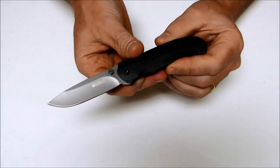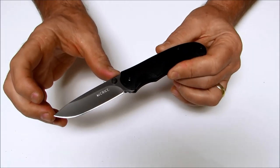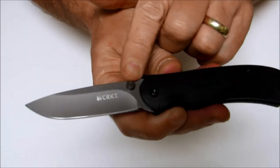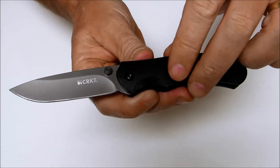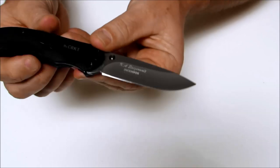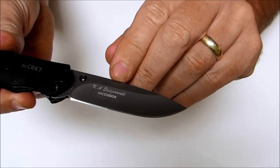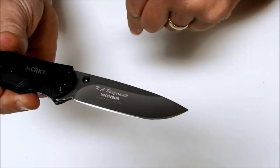It's got a drop point blade that's just slightly less than three inches traditional. You have a hollow grind on it. CRKT on this side. The blade is coated with a gray titanium nitride finish. On this side you have KA Steigerwald Incendor US patent pending.